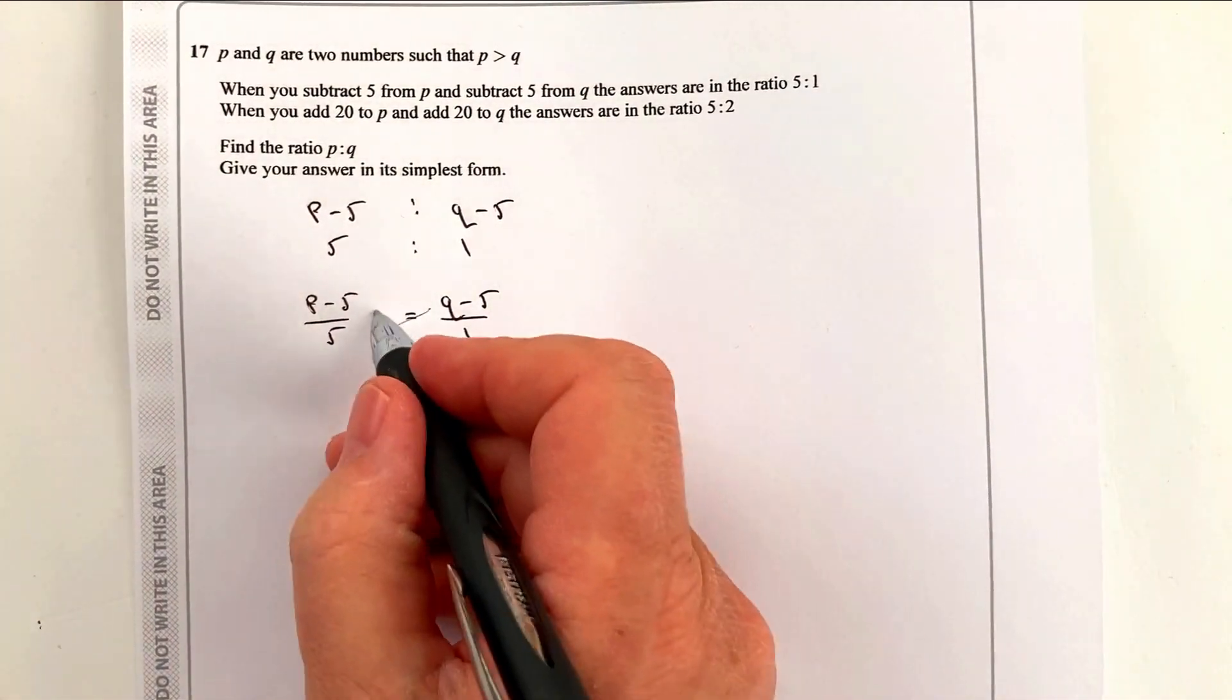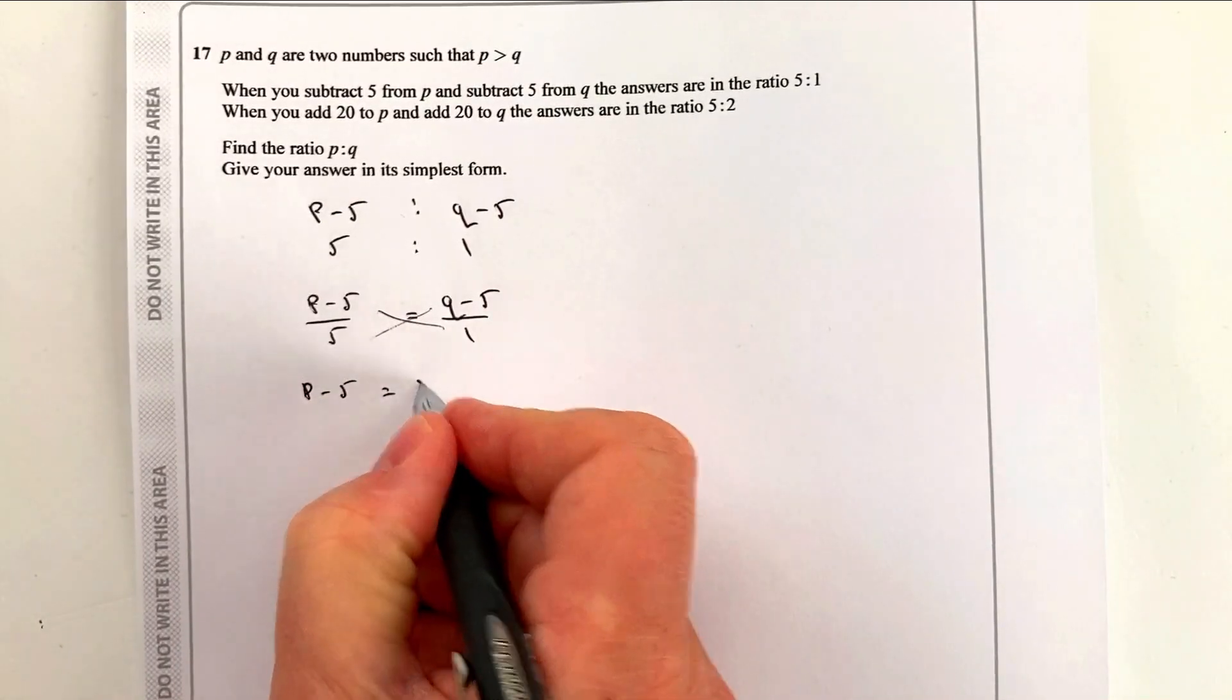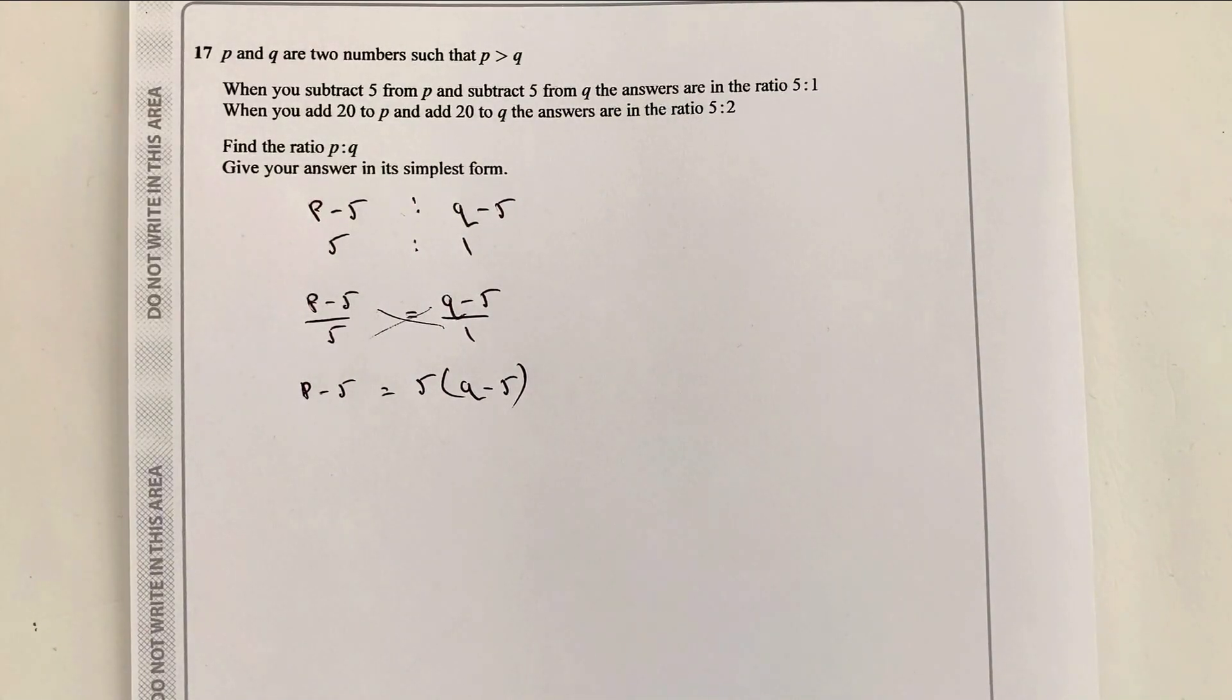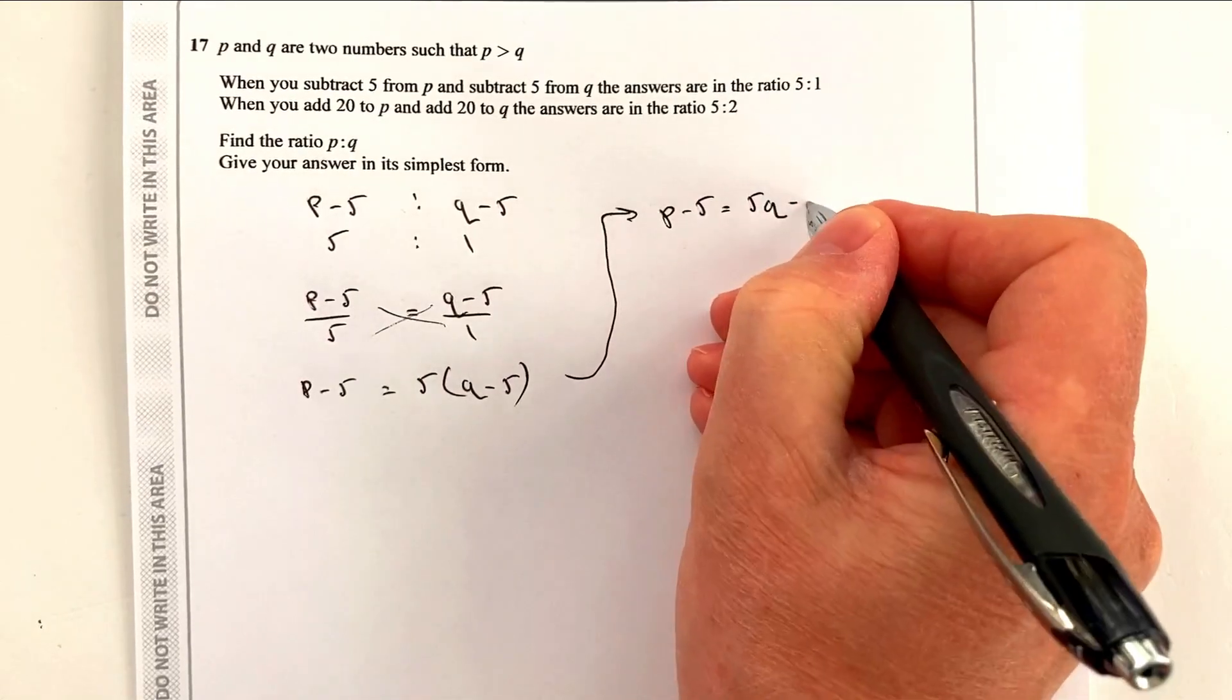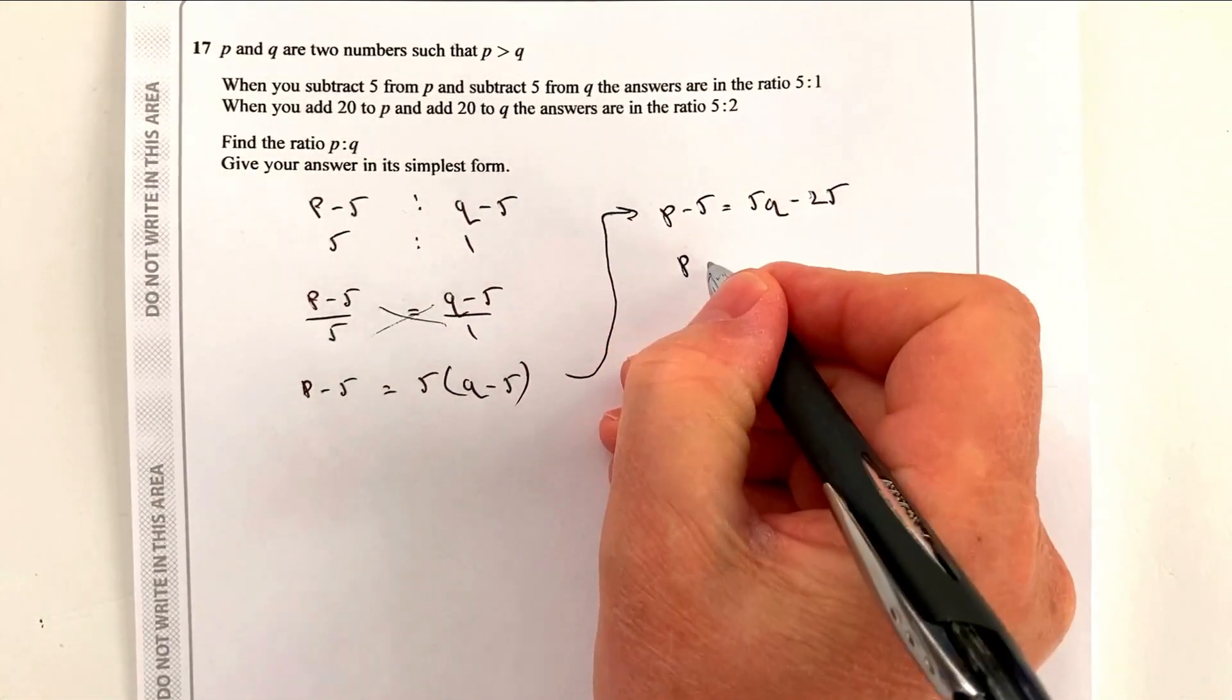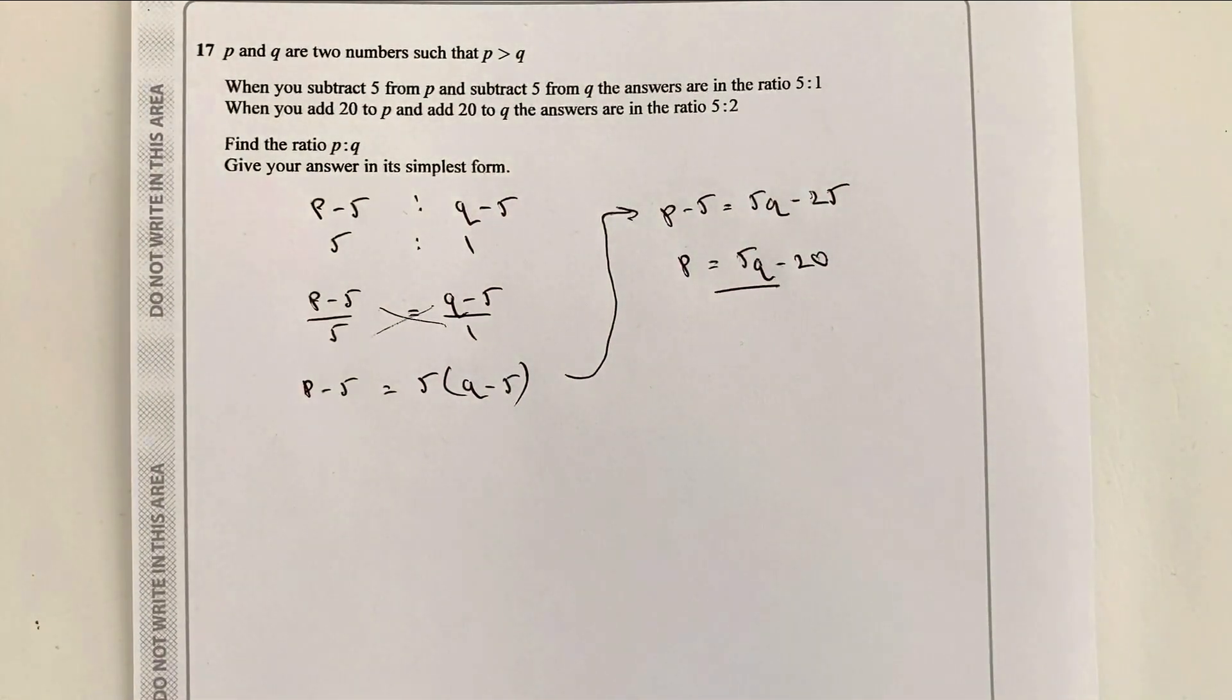So we're saying that P minus 5 in the ratio of Q minus 5 is going to be 5 to 1. Now what we can do is we can rewrite this—I'm not sure whether you'll have come across this too often—but we can write this actually as fractions. What we can say is P minus 5 over 5 equals Q minus 5 over 1. Now what I'm going to do is I'm going to cross multiply. If I cross multiply it gives me the ability to get P equals something, and that's going to be important for me going forward because of the next bit of the particular question. So if I cross multiply, I've got P minus 5 times 1, which is still P minus 5, and that equals 5 times Q minus 5.